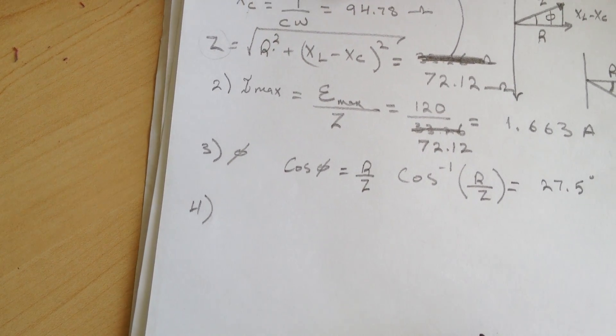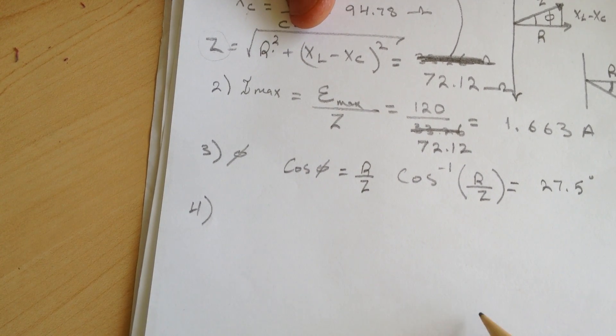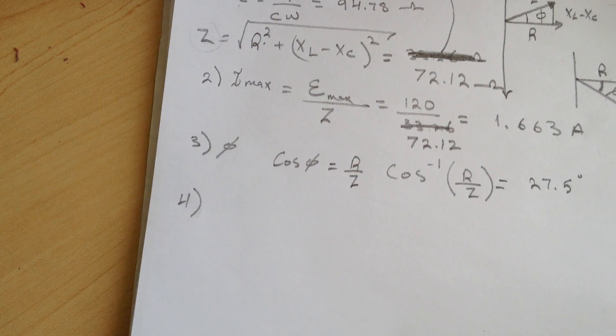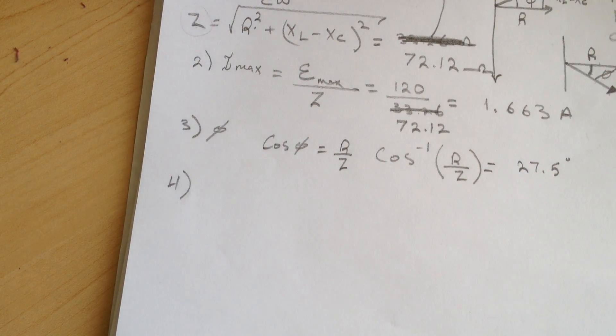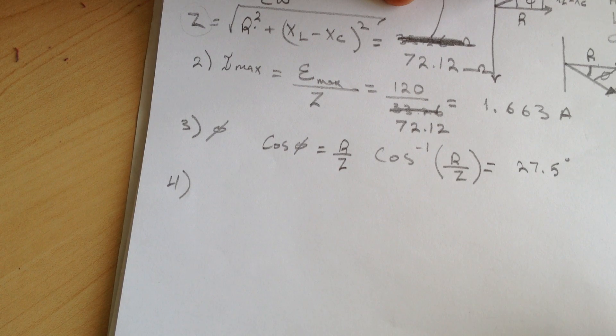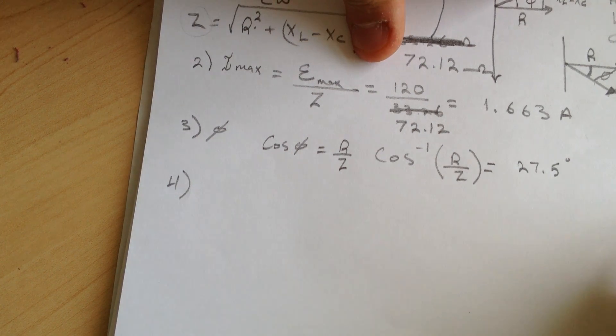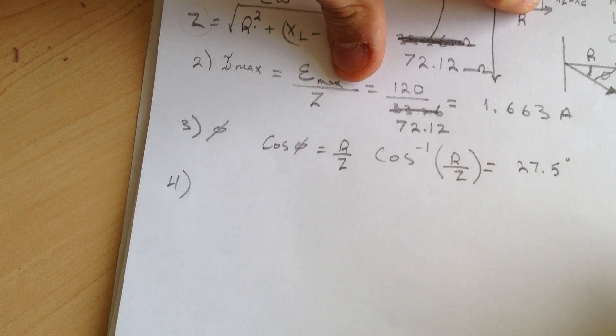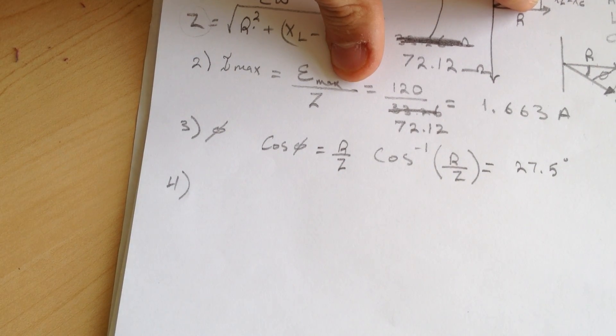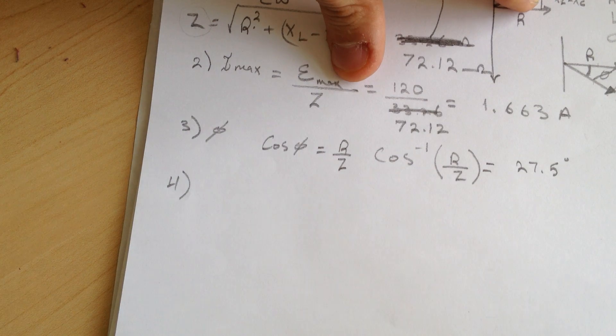So going to number four, they're asking what is t1, the first time after t equals zero when the voltage across the inductor is zero? So they want the inductor equal to zero. So when we actually write the or draw the voltage diagram.